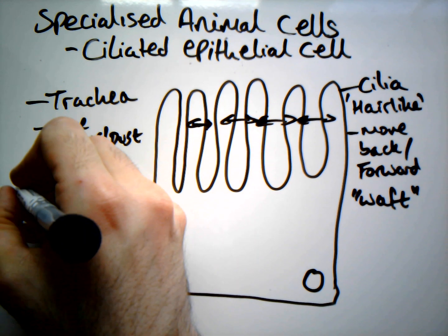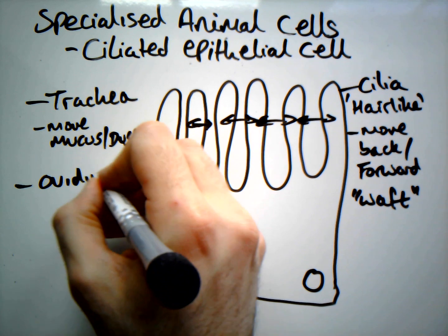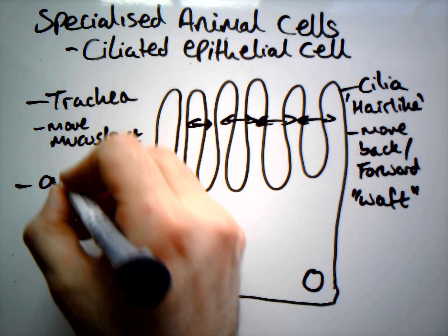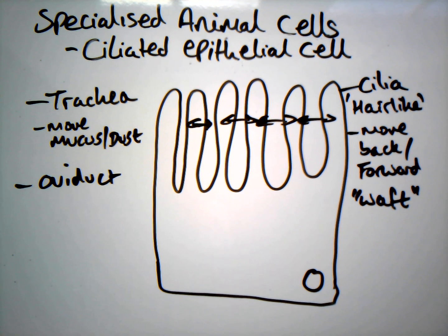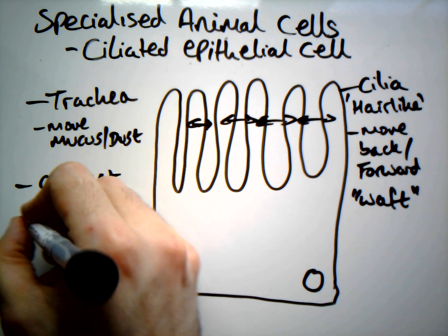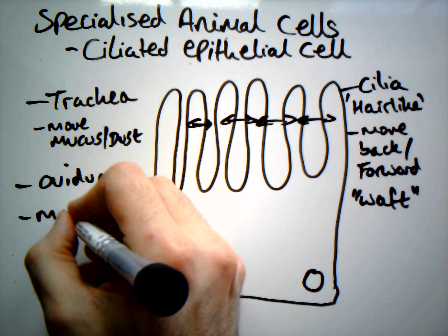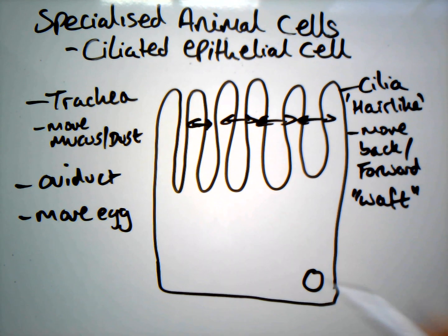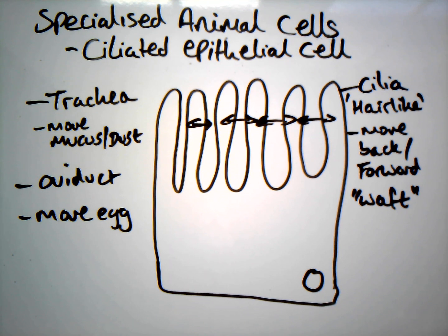The other place you might find them is in the oviduct, which joins our ovaries to our uterus. There they move the egg away from the ovaries towards the uterus in an attempt at fertilization, leading to pregnancy or menstruation. And that's everything you need to know about ciliated epithelial cells.